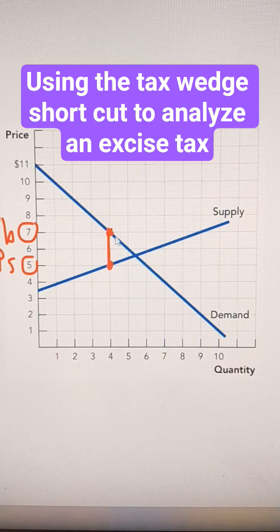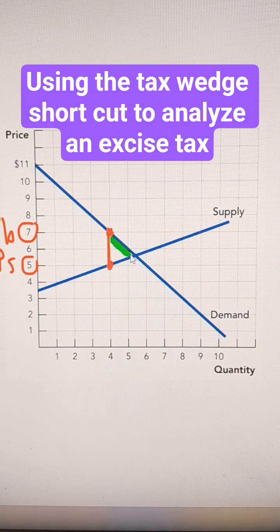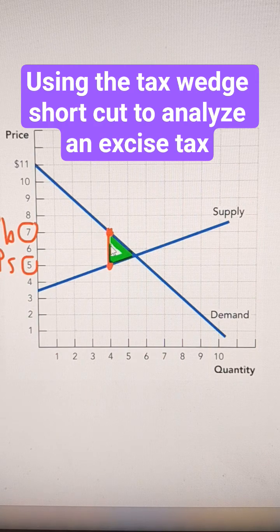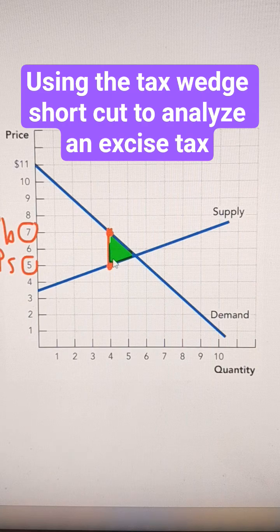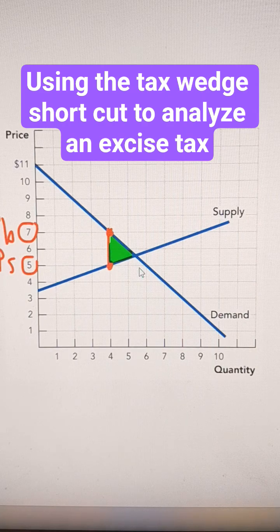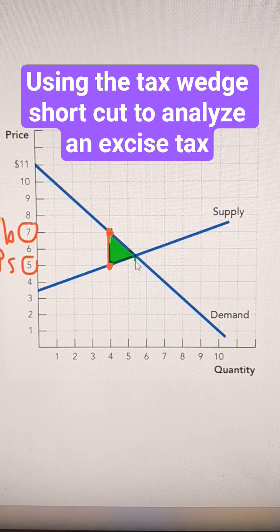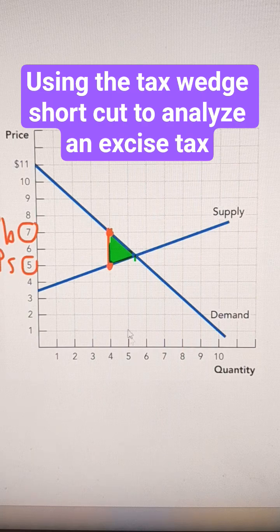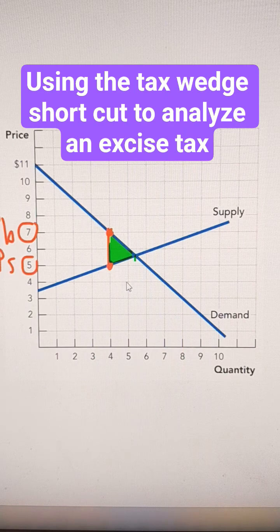The deadweight loss is going to be the area between the old equilibrium and our tax wedge. So it's going to be $2 on, it looks like about a unit and a half. So it would be one and a half would be the calculation of the deadweight loss.